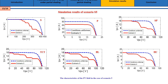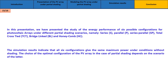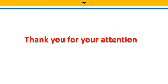In this presentation we have studied the energy performance of six possible configurations for photovoltaic arrays under different partial shading scenarios, namely: Series-Parallel, Total Cross-Tied, Bridge-Linked, and Honeycomb. The simulation results indicate that all six configurations give the same maximum power under conditions without shading. The choice of the optimal configuration in the case of partial shading depends on the shading scenario. Thank you for your attention.